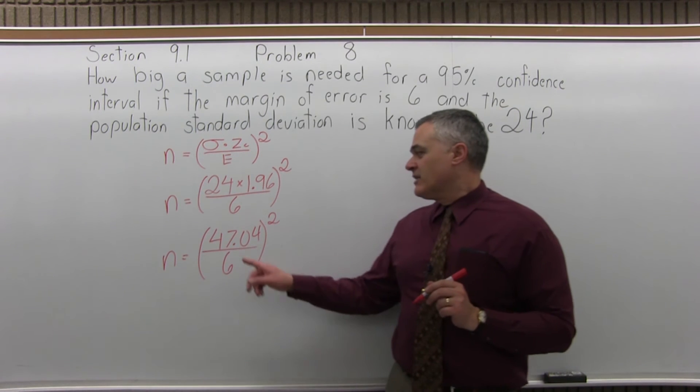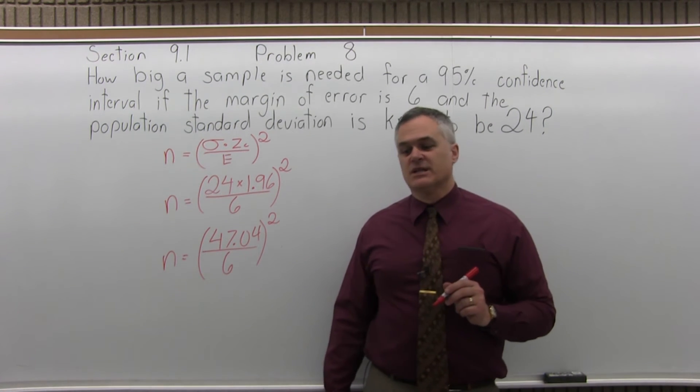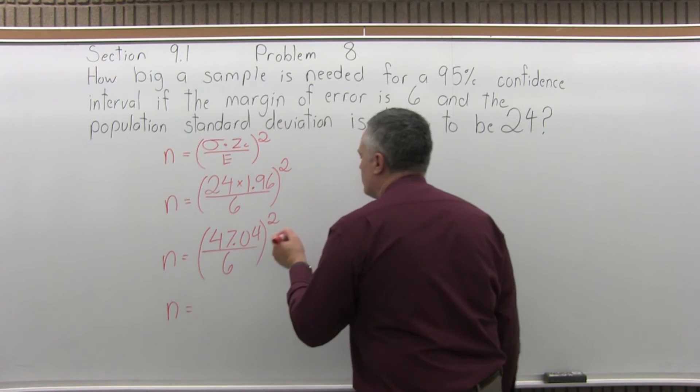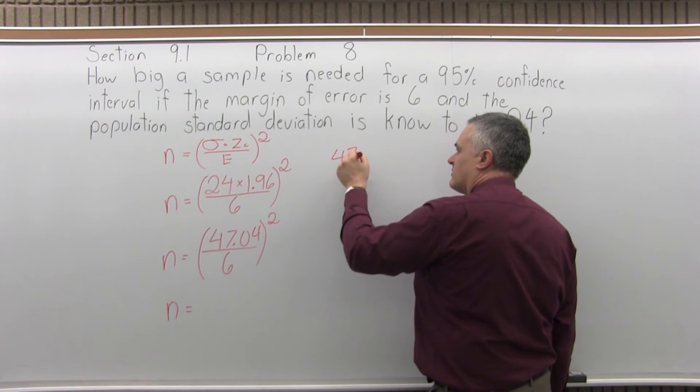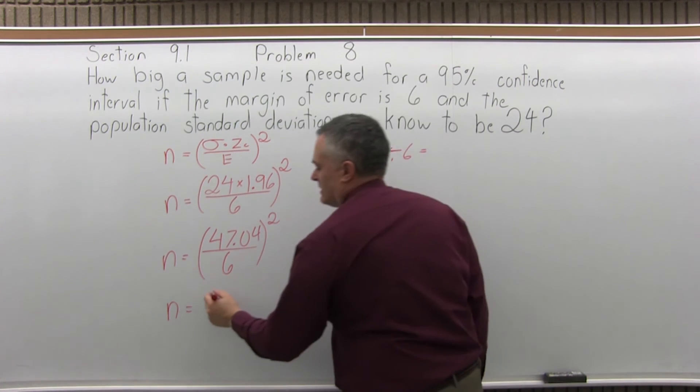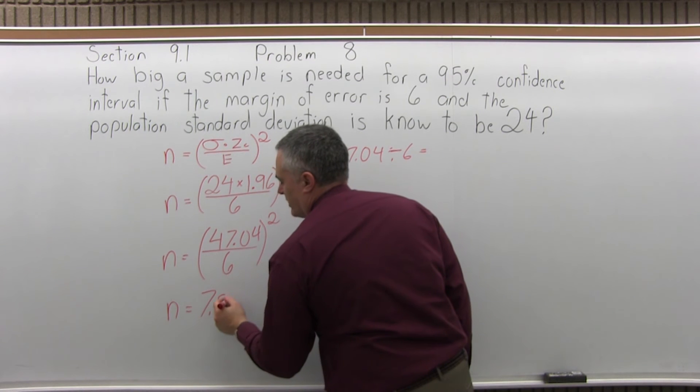And now you can divide 47.04, divide by 6, which will give you 7.84 when you do that division. You probably want to do that on your calculator. So just off to the side, 47.04 divide by 6 equals, and you will see that it's 7.84.